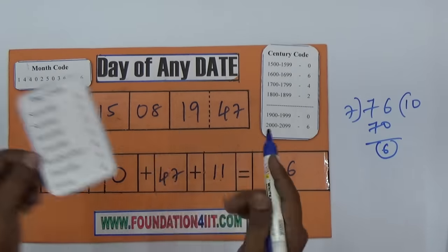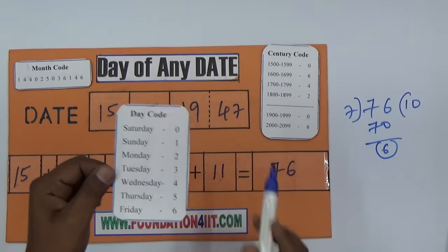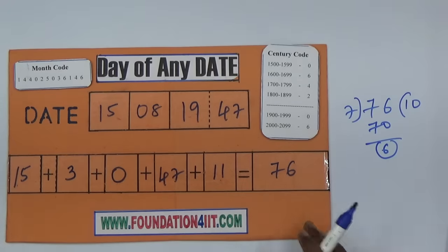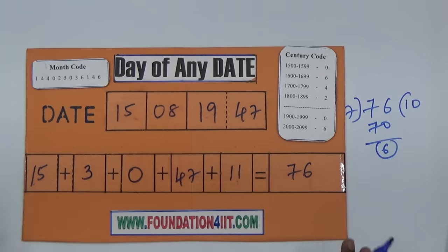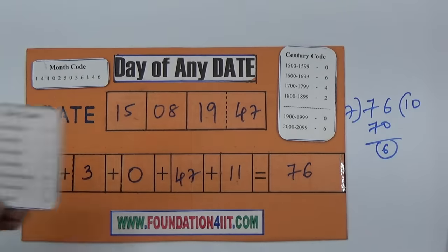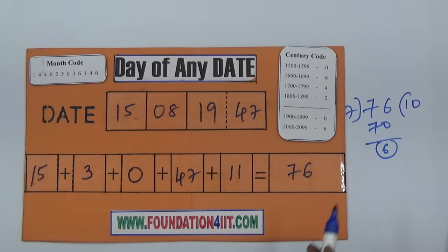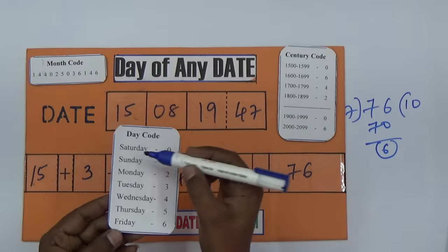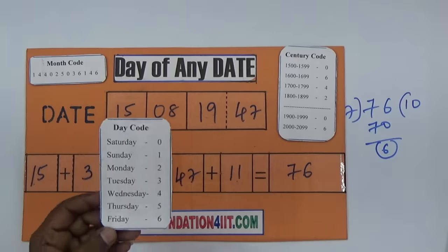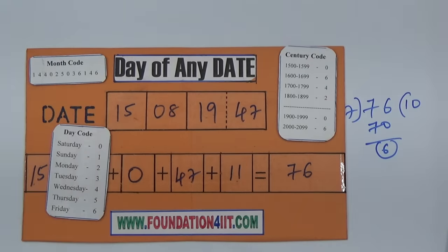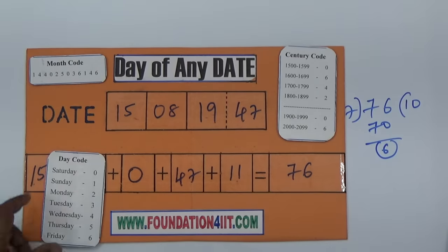See the day code. We got independence on 6, which means Friday. 1947, August 15th is Friday. It's very simple - just only these two codes. Month code and century code you need to remember. And don't worry about the day code - just Saturday begins with zero.